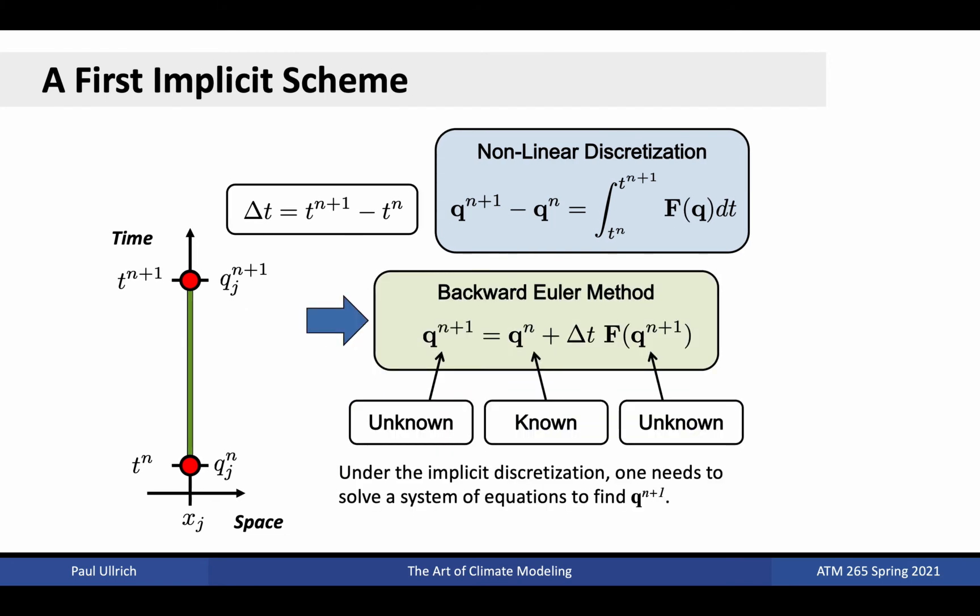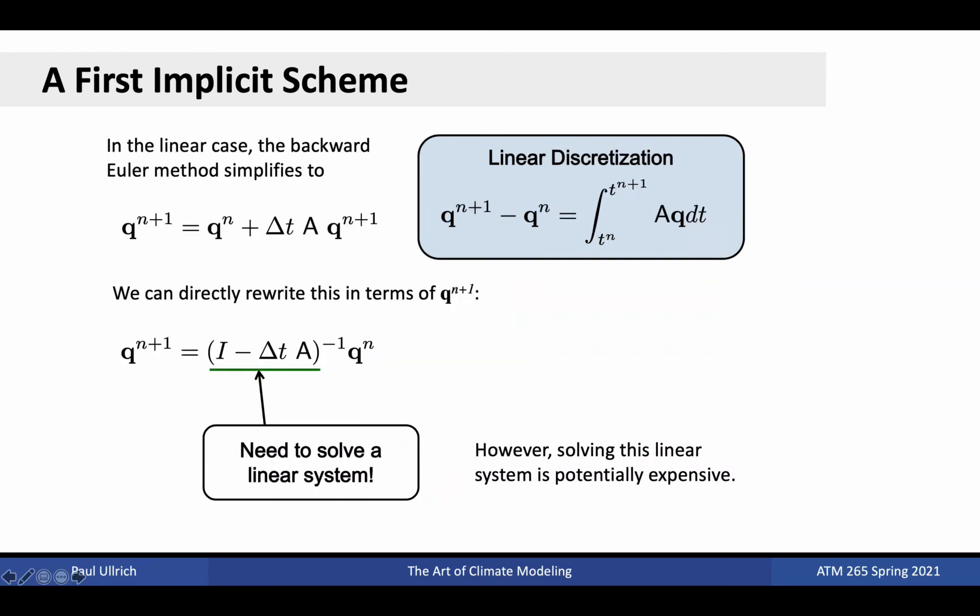Although more complicated, this is nonetheless a single equation in a single unknown, and so we would expect that it does have a solution. This is, of course, far more involved than the forward Euler method. To understand how we might go about solving this problem, let's first consider the case of a linear right-hand side.